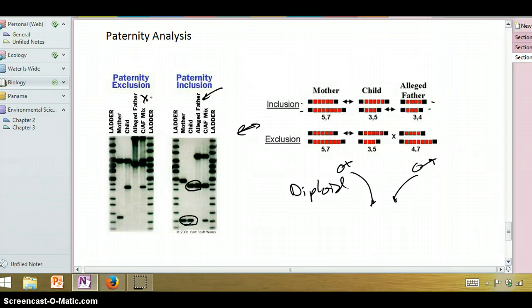Essentially, the child has to be a combination of mom and dad, so they're going to inherit one of their pieces of DNA from mom and one from dad. If none of dad's pieces of DNA match up with anything from the child, that excludes him as the father of that child.